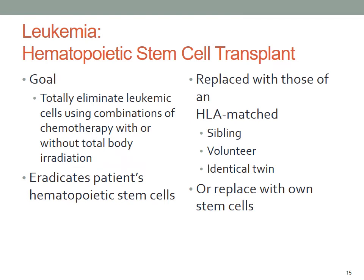Hematopoietic stem cell transplant, or HSCT, is used to treat different types of leukemia. The goal of HSCT is to totally eliminate leukemic cells from the body using a combination of chemotherapy with or without total body irradiation. The patient's hematopoietic cells are totally eradicated and replaced with stem cells from siblings, a volunteer donor, the patient's own stem cells, or an identical twin. Complications with HSCT include infection, leukemia relapse, or graft-versus-host disease, wherein the donor stem cells attack the recipient. Because HSCT has serious associated risks, the patient must weigh the significant risks of treatment-related death or failure against the hope of a cure.